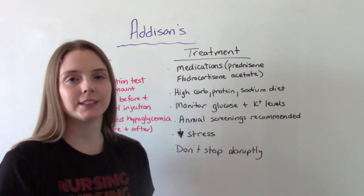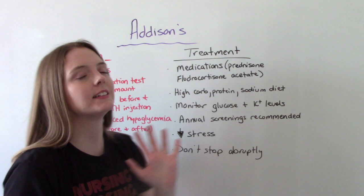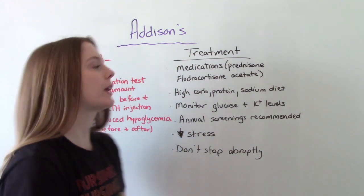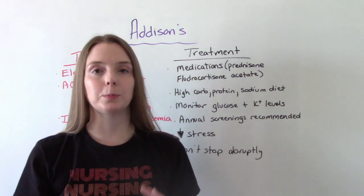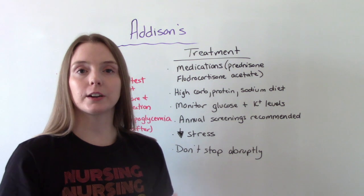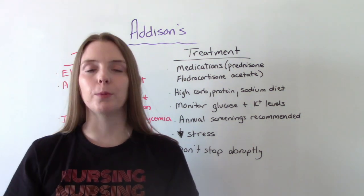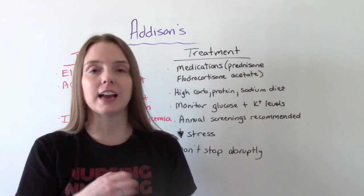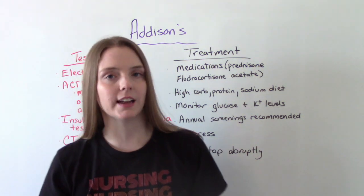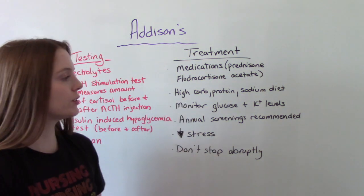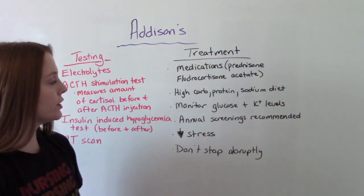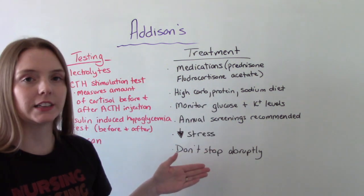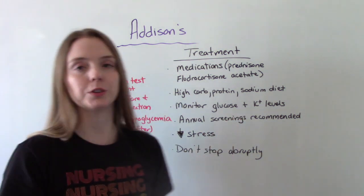All treatment for Addison's involves medications. We give prednisone to replace cortisol and fludrocortisone to replace aldosterone. A diet high in carbohydrates and protein is recommended, and patients need adequate salt intake since their body isn't retaining sodium properly. As nurses, we monitor glucose and potassium levels closely, as glucose can drop dangerously low and potassium can rise dangerously high.